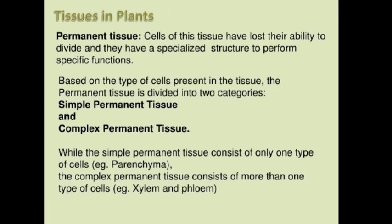Coming to the permanent tissues: permanent tissues are cells which have lost their ability to divide and have a specialized structure to perform specific functions. Based on the type of cells present in the tissue, permanent tissue is divided into two categories: simple permanent tissue and complex permanent tissue. Simple permanent tissue consists of only one type of cells, for example parenchyma, while complex permanent tissue consists of more than one type of cells, for example xylem and phloem.